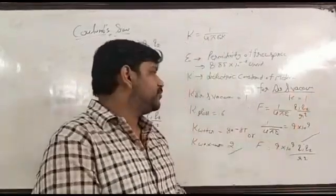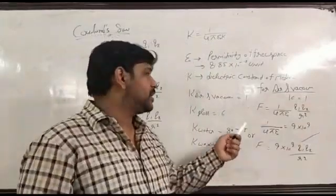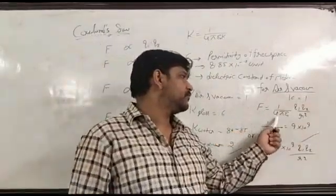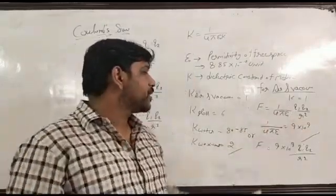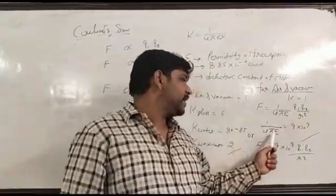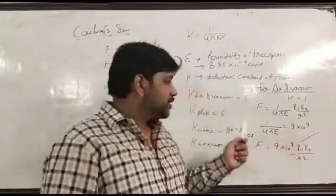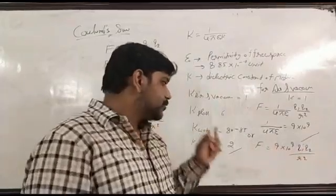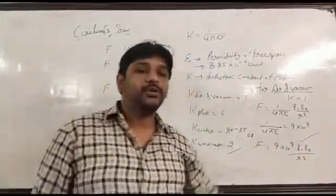For air and vacuum we know very well k is equal to 1, so formula of Coulomb's law also written in this form: F equal to 1 upon 4 pi epsilon not q1 q2 upon r square. 1 upon 4 pi epsilon not has value 9 times 10 to the power 9, so Coulomb's law also written as 9 times 10 to the power 9 q1 q2 upon r square.